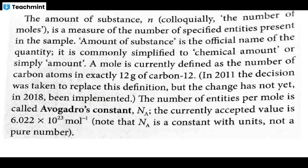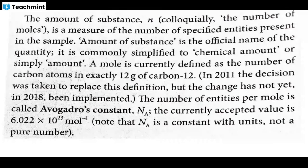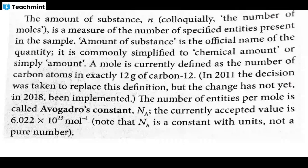Amount of substance is defined as number of moles. A mole is the number of carbon atoms exactly in 12 grams of carbon, which is 6×10²³ — Avogadro's constant. This is the number of entities per mole. You can take one mole of nitrogen or hydrogen and count — it is always Avogadro's number. It is a constant with a unit, not a pure number. In physical chemistry, all units are important — you should multiply or divide them like algebra.